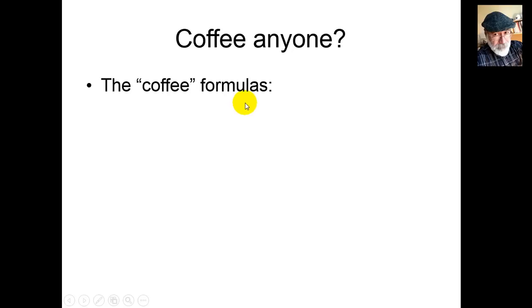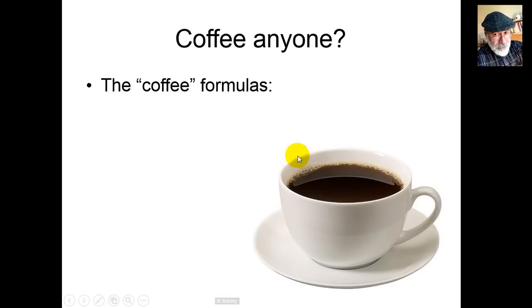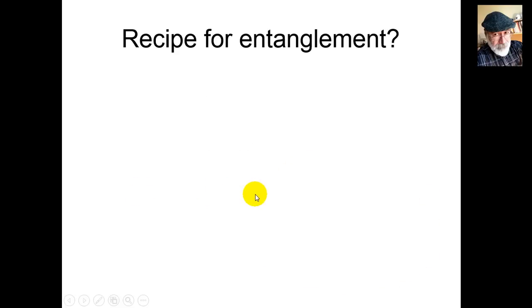Coffee, anyone? I call these two formulas, just as a mnemotechnics, the coffee formulas, because both of them have the k·φ term in front. k·φ: induced voltage = k·φ·ω radians per second. Induced torque = k·φ·armature current in amps.